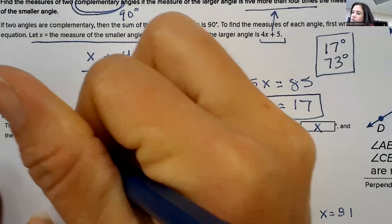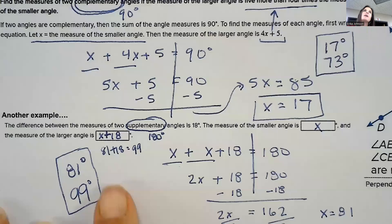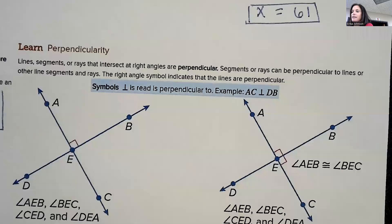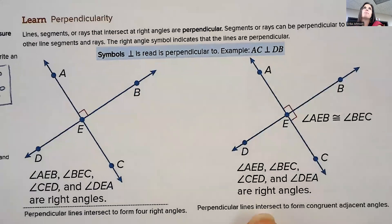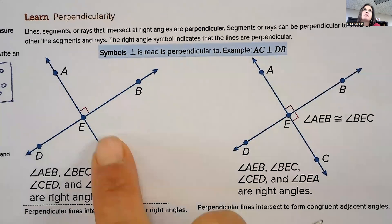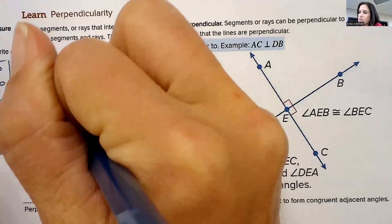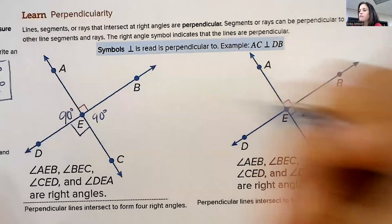And that would have a sum of 180. So I just took that 81 for X and plugged it in, so 81 plus 18 was 99. Perpendicularity — line segments or rays that intersect at right angles are called perpendicular. Segments or rays can be perpendicular to lines or other line segments and rays. The little square in the corner indicates the lines are perpendicular. If you have two perpendicular lines intersecting, they will make four 90-degree angles — this will be 90, this will be 90, this will also be 90. They're all 90 degrees.